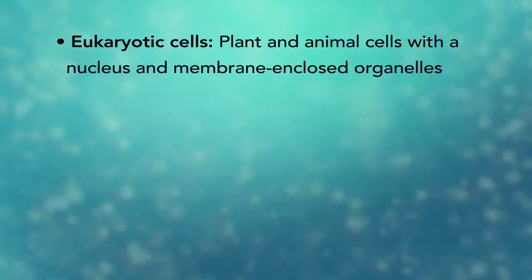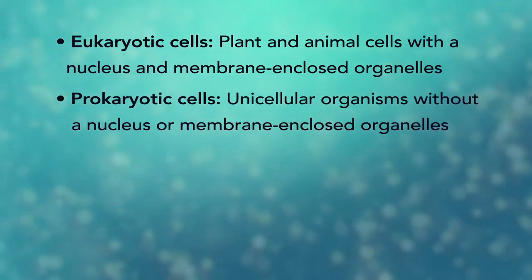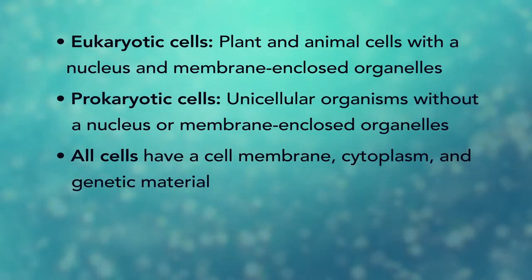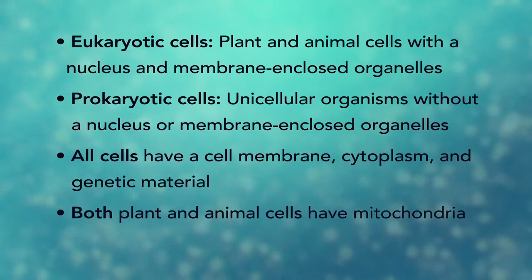In summary, remember, eukaryotic cells are plant and animal cells with a nucleus and membrane-enclosed organelles, while prokaryotic cells are unicellular organisms without these things. All cells have a cell membrane, cytoplasm, and genetic material. And even though only plant cells have chloroplasts, both plant and animal cells have mitochondria.